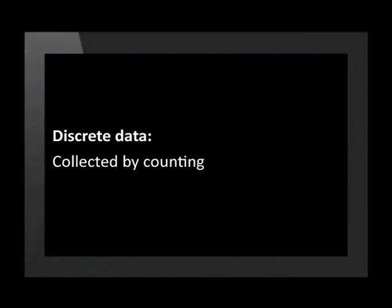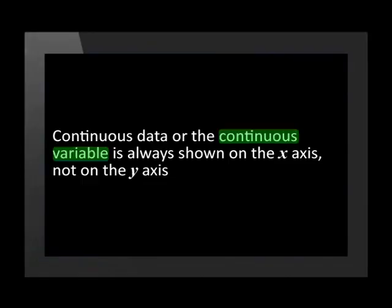Now let's quickly recap what we've seen so far. Discrete data is collected by counting separate items, and continuous data is collected by measuring and is usually rounded off when the exact measurement can't be given. When we work with graphs, there's an important mathematical convention we use: continuous data, or the continuous variable, is shown on the x-axis, not the y-axis. Now I think we're ready to take a look at the graphs from the last lesson and see if we can identify the different kind of data used for each one.